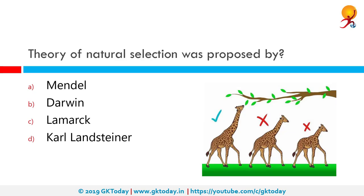The theory of natural selection was proposed by whom? The correct answer is Darwin. Natural selection is the differential survival and reproduction of individuals due to differences in phenotype. It is a key mechanism of evolution — the change in heritable traits of a population over generations.